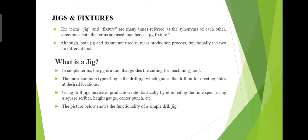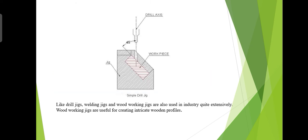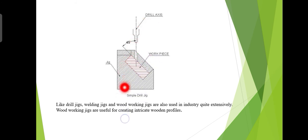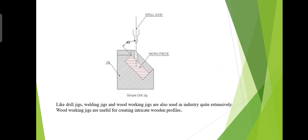Now, this is the basic diagram of a simple drill jig. This one is the workpiece, this is the drill axis, this is the drilling tool, and this is the jig that holds the workpiece. You can perform the drilling operation on the workpiece in this way.